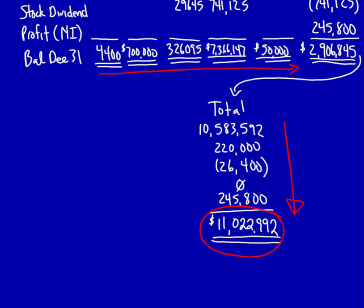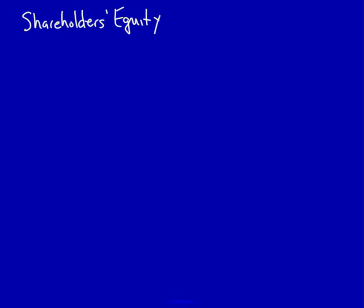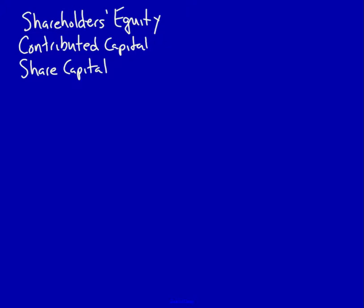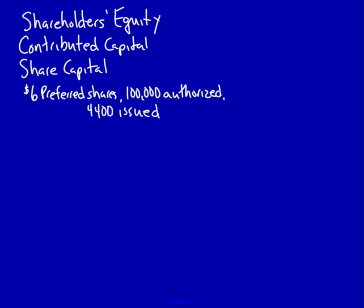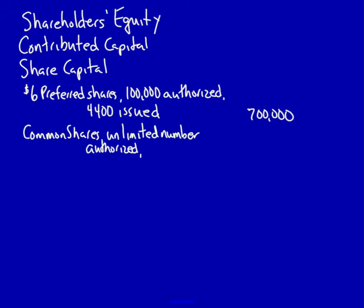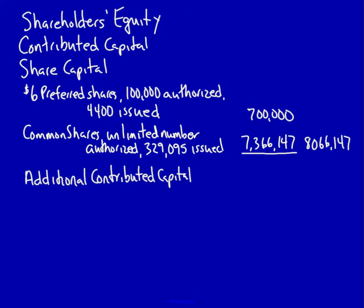We're going to use that information to create the shareholders' equity section of the balance sheet, also called the statement of financial position. I'll start with the title 'shareholders' equity,' add a subtitle 'contributed capital,' then 'share capital.' Now I start listing the same items as on the statement of changes in equity, in the same order — preferred shares with their amount, then common shares. I now provide a total for share capital, then additional contributed capital, which is the contributed surplus, also called contributed capital.